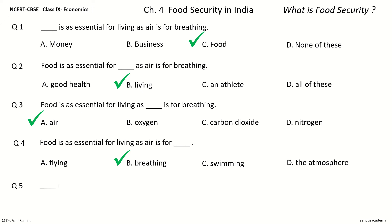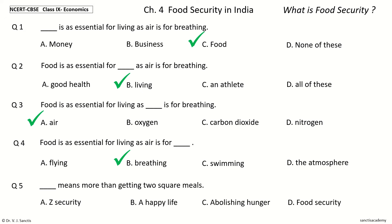Question 5: Dash means more than getting two square meals. The options are: Z security, a happy life, abolishing hunger, food security. Your time to choose. And the answer is food security. So food security means more than getting two square meals.